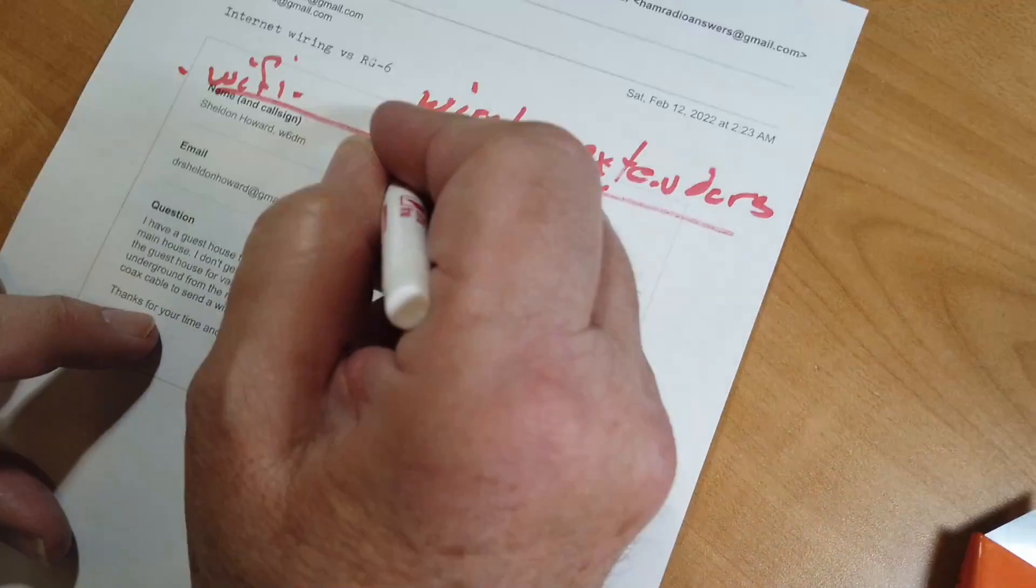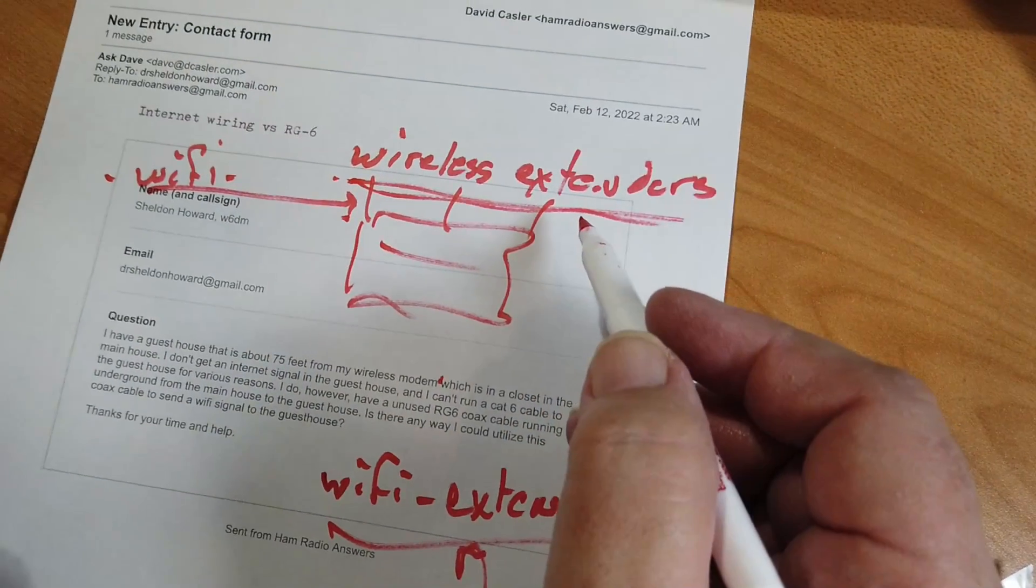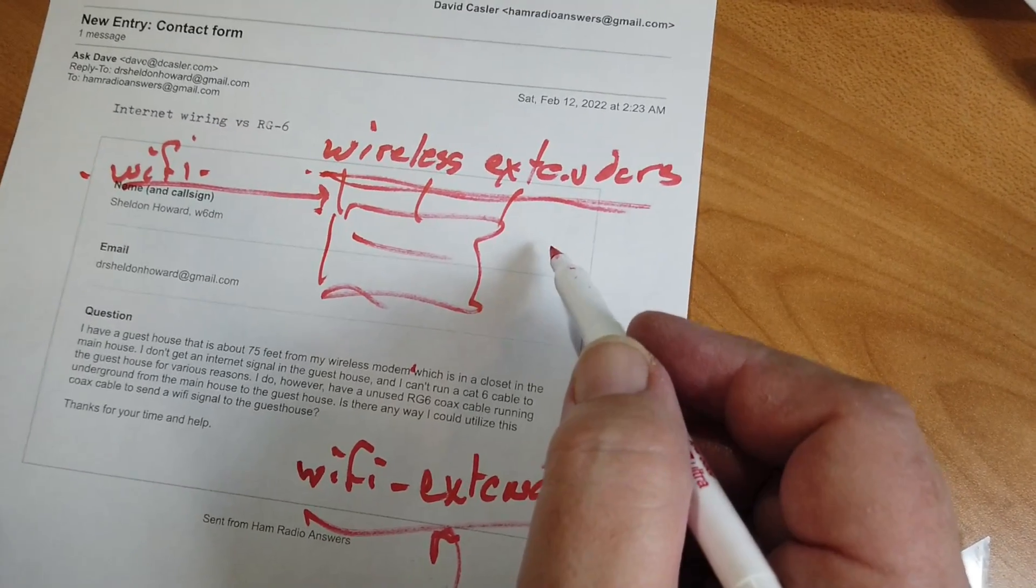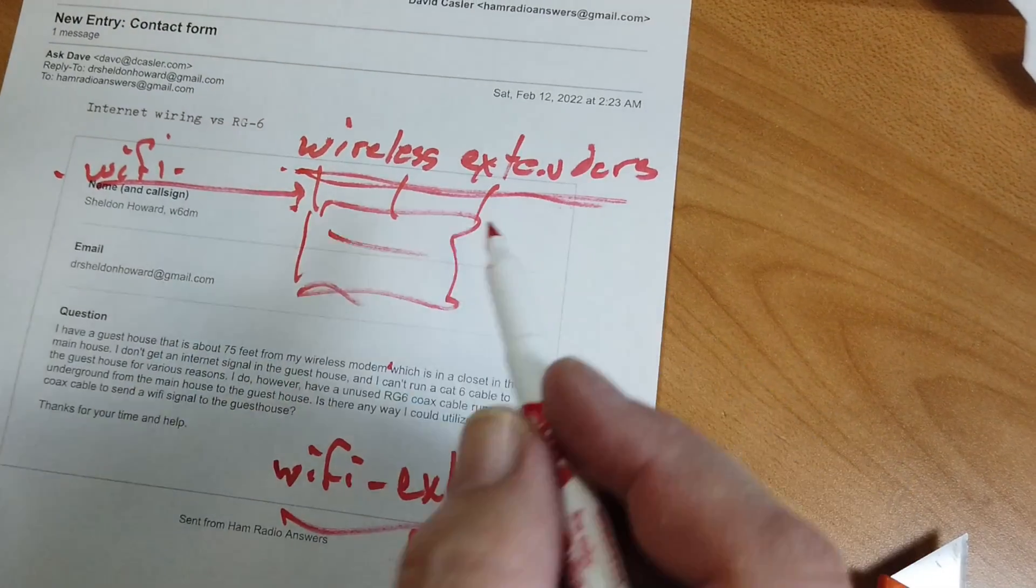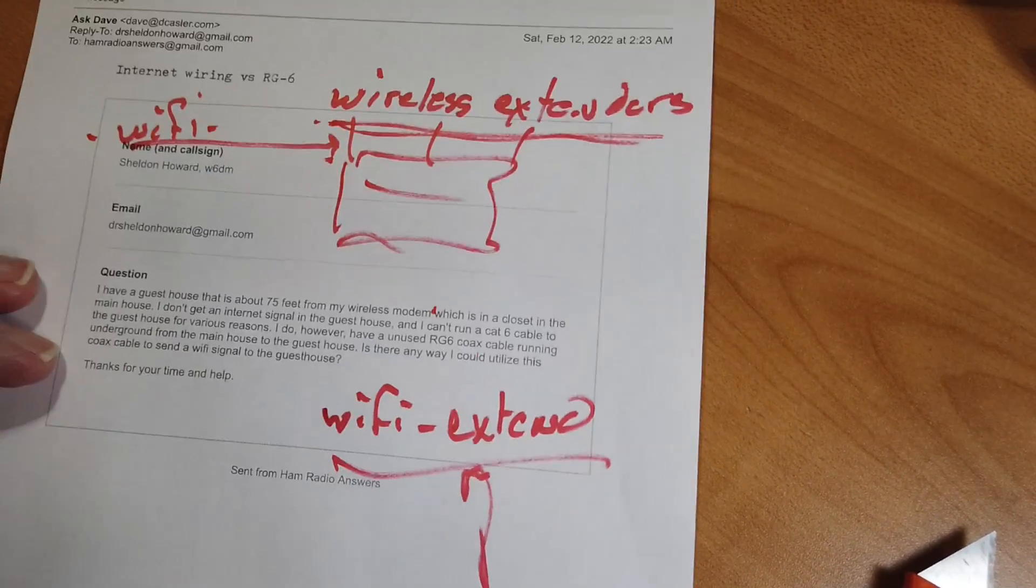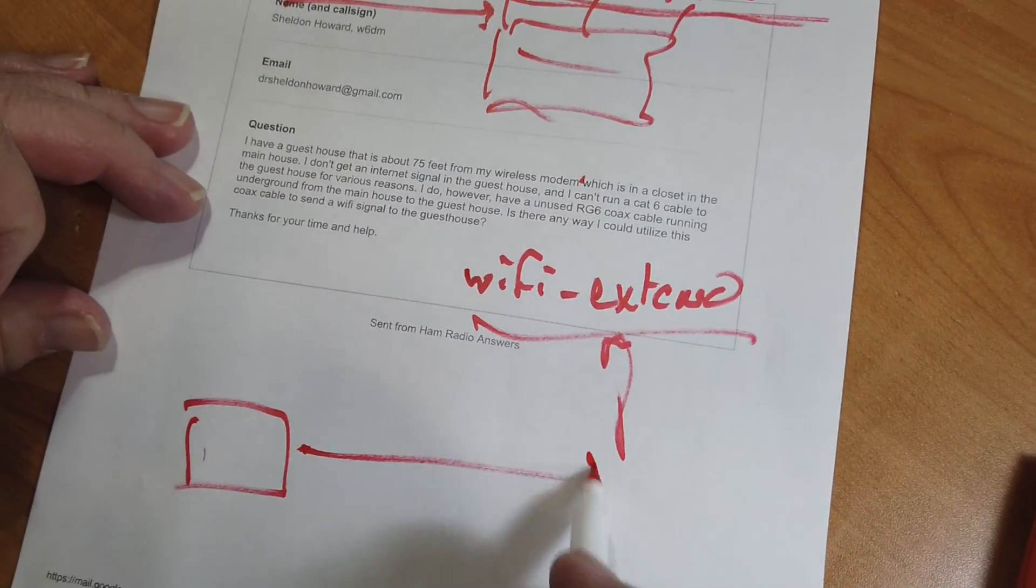Now, you could put a wireless extender up under your eaves, in a window that overlooks the cottage, something like that. And you may find that you can get the wireless in there that you want. You can always do two wireless extenders over long distance.